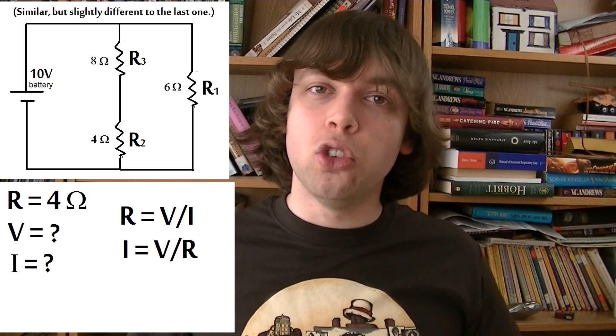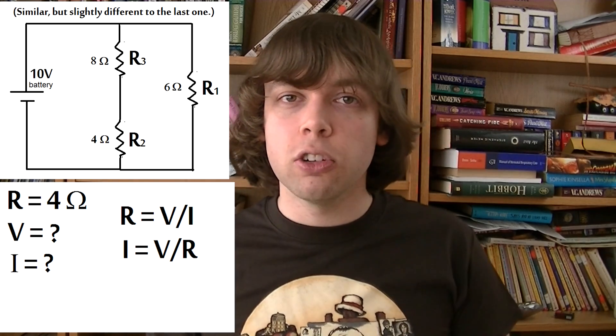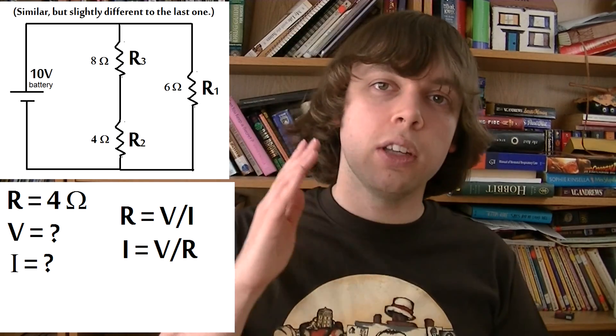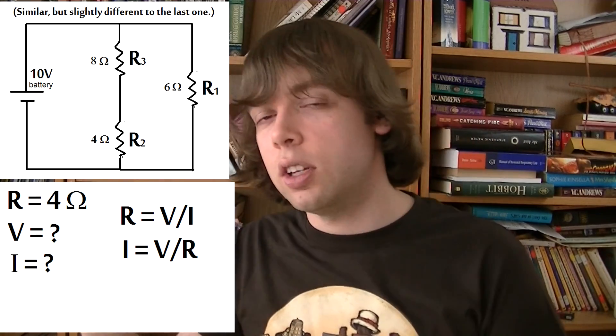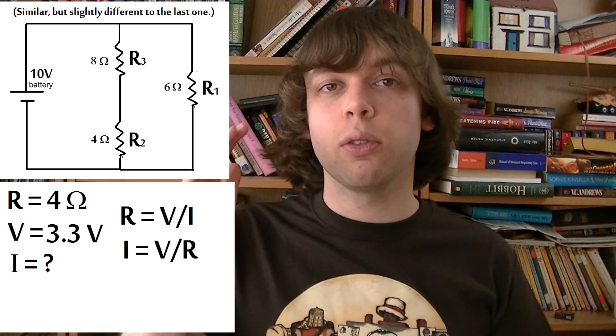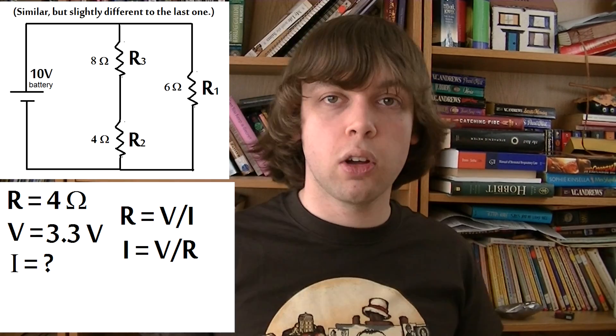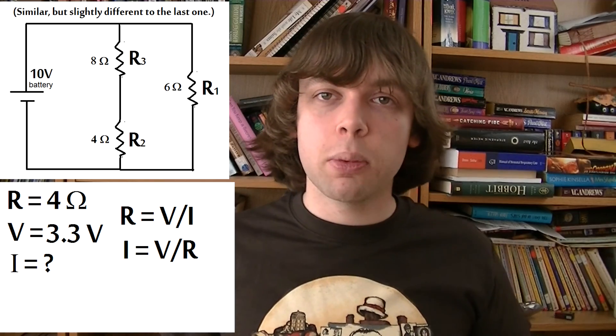Since resistor 3 has double the resistance of resistor 2, it will use up double the amount of voltage. So resistor 3 will use 6.6666666 etc volts, and resistor 2 will use 3.3333333 volts. Or in other words, 6 and 2 thirds volts and 3 and a third volts. Now after that little bit of reasoning,